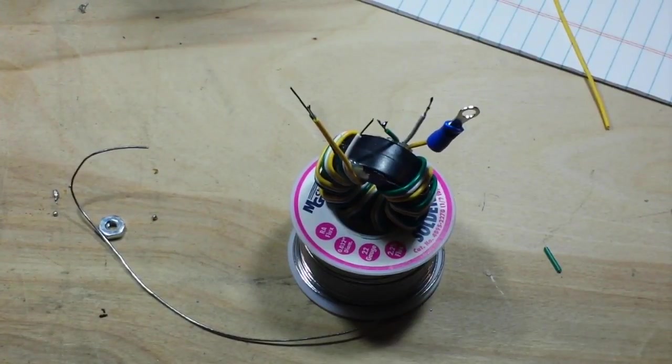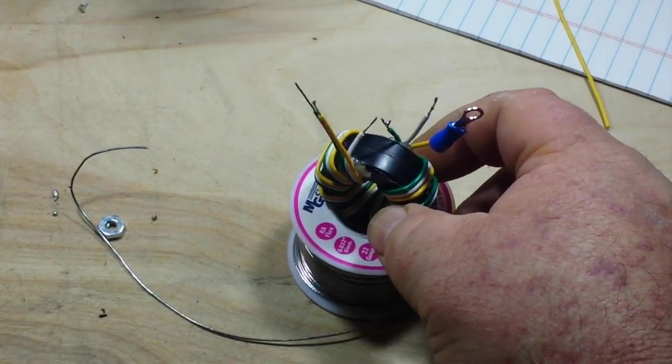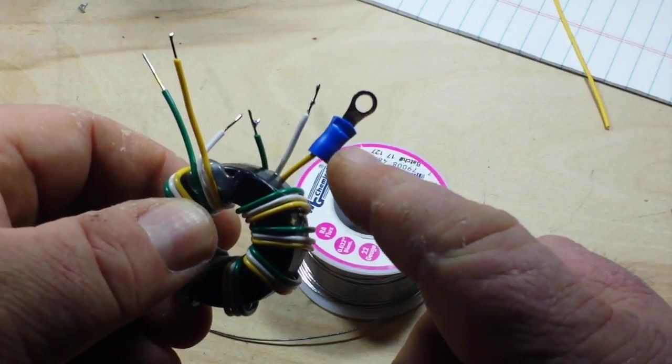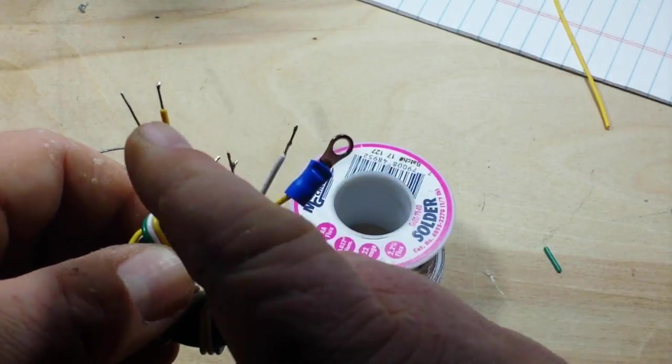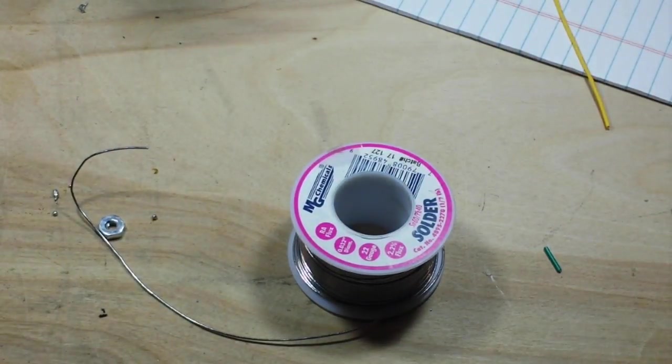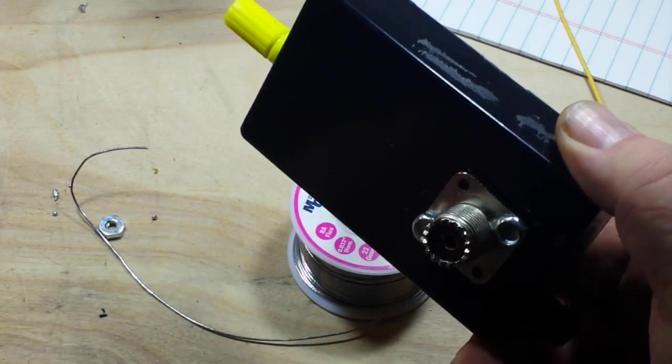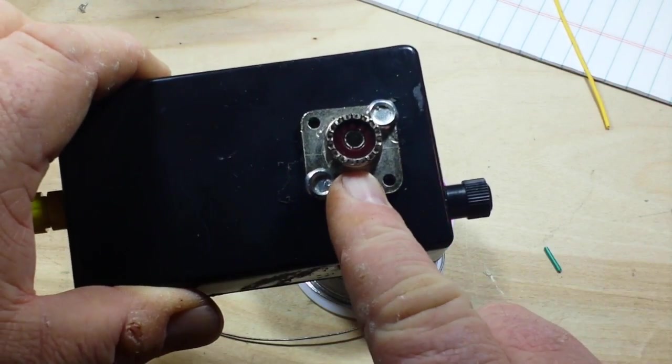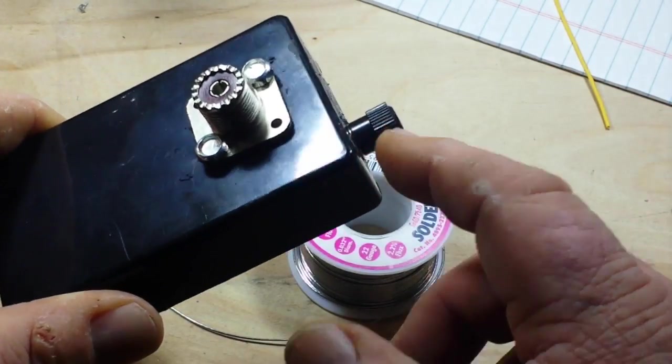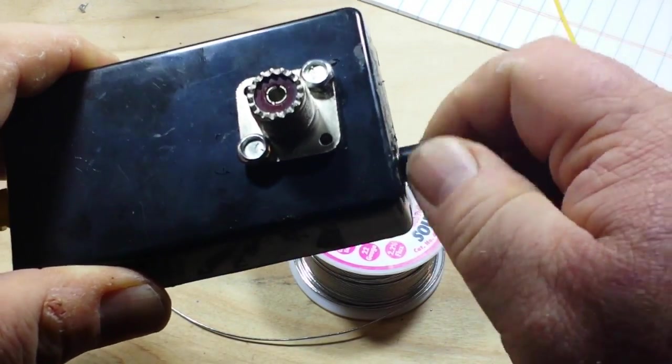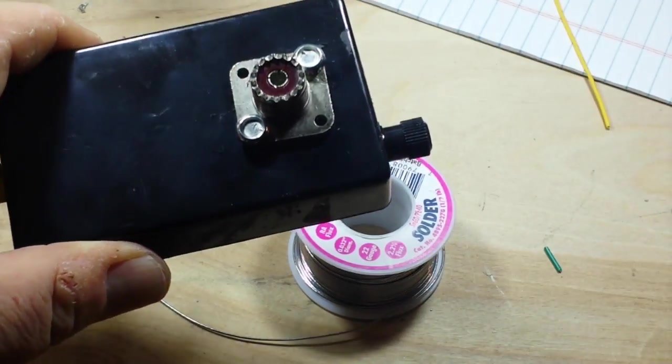All right, while you weren't looking, I got a few things ready. I just got a little ring terminal on here where it's going to the ground. These are all tinned. And then I have my enclosure ready. We got an SO-239 for the input, we've got a binding post for our ground, and another binding post for our antenna.